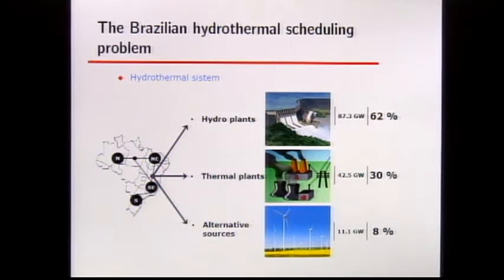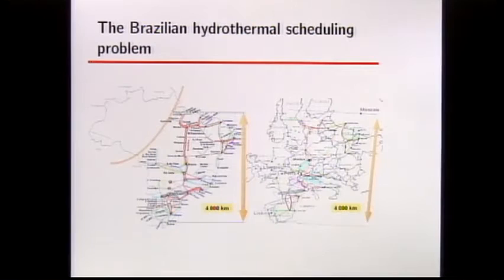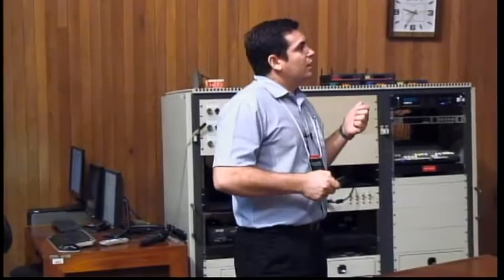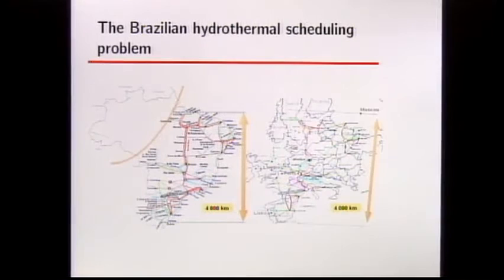These uncertainties are modeled as a stochastic process following a log-normal distribution. The problem is also difficult because of its dimension. This is a Brazilian interconnected power system — for example, a power plant in the south can generate and send electricity up to 4,000 kilometers to the north. If you overlay the Brazilian map on Europe, the resulting power system would stretch from Portugal to Russia. It's a really huge power system.